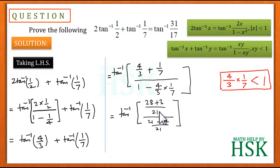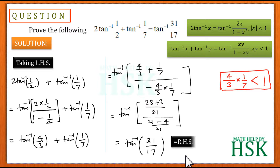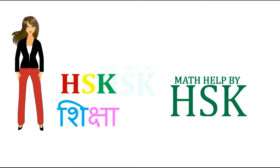Taking LCM as 21, the numerator becomes 28 + 3 = 31, and the denominator becomes 21 − 4 = 17. The 21s cancel out, leaving tan⁻¹(31/17), which equals the right hand side. This is how we prove question 4.